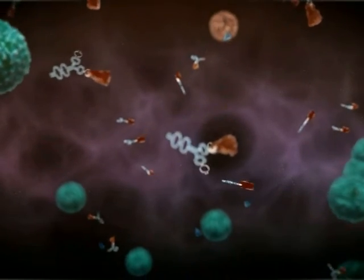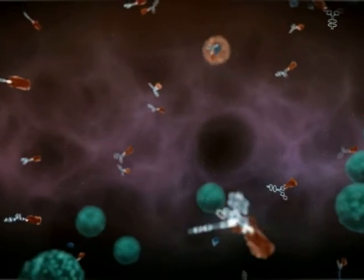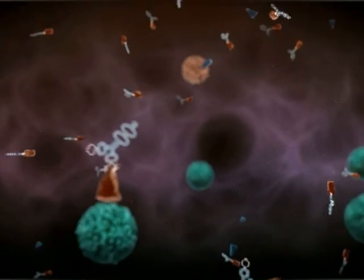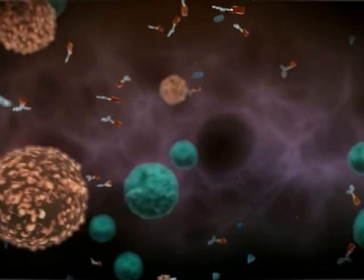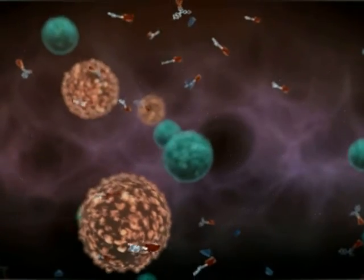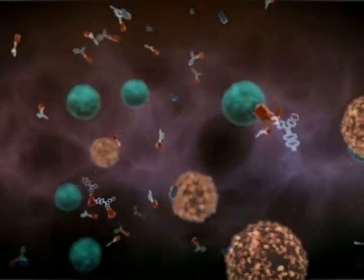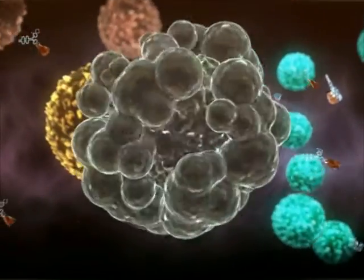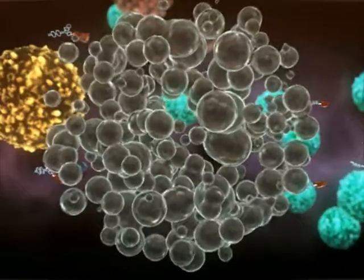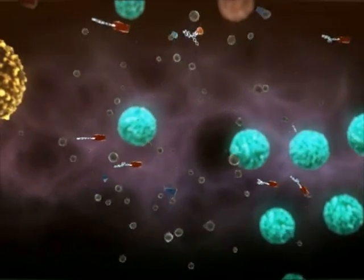In the spleen, belimumab blocks the BLyS-mediated transition of immature B-cells from the T1 to T2 stage, preventing the generation of mature B-cells. The T1 to T2 transition is a key checkpoint for negative selection of B-cells. Belimumab treatment may lead to an increase in apoptosis and depletion of these auto-reactive B-cells.